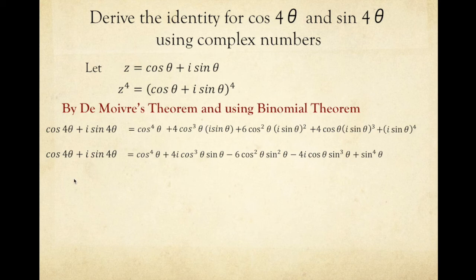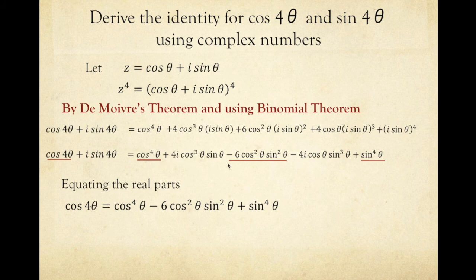Equating the real parts: cosine 4 theta equals cosine to the power of 4 theta minus 6 cosine squared theta sine squared theta plus sine to the power of 4 theta. This gives the identity for cosine 4 theta. If you want this expressed only in terms of cosine theta, you can use the Pythagorean identity to replace sine squared theta with 1 minus cosine squared theta.